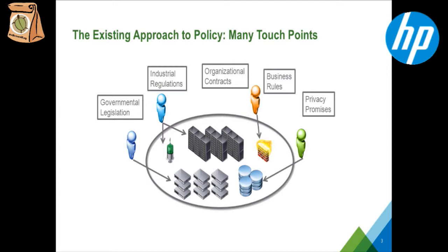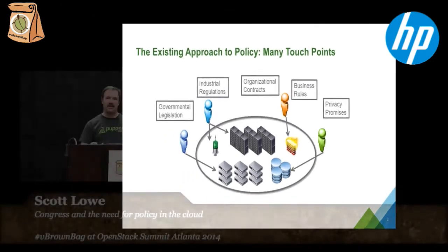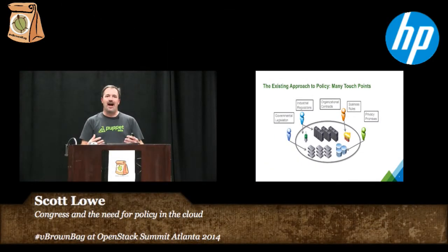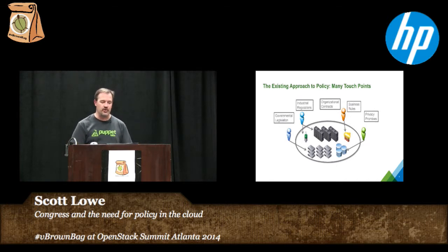You have lawyers taking organizational contracts and saying we have to require that we do X, Y, or Z. You have business rules and privacy promises. So you have all these different organizations applying some subset of the overall policy — the overall policy being what it would look like if we took all of these things together and compiled them to say: this is how our cloud resources need to be controlled, affected, allocated, or utilized.